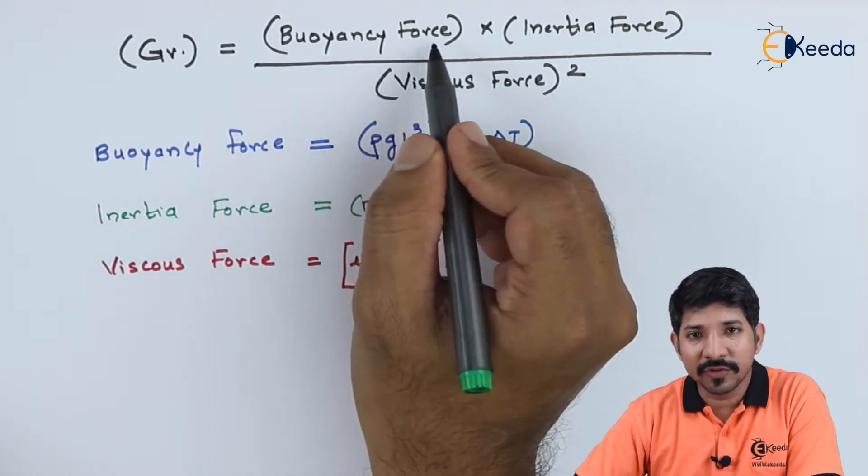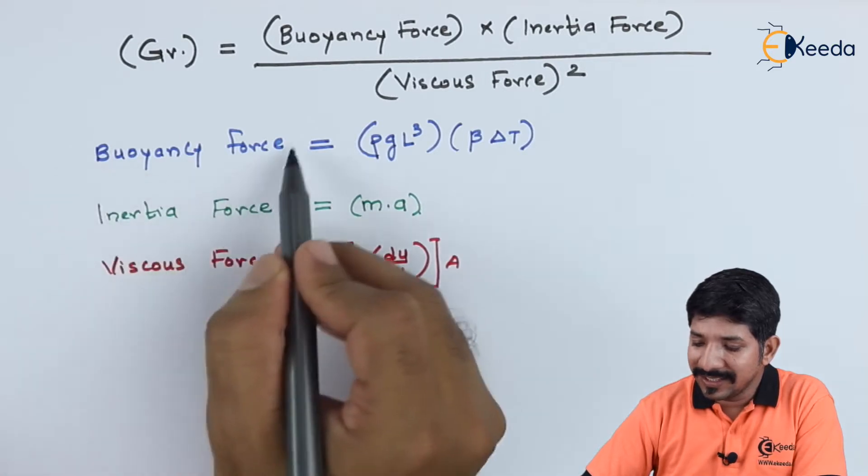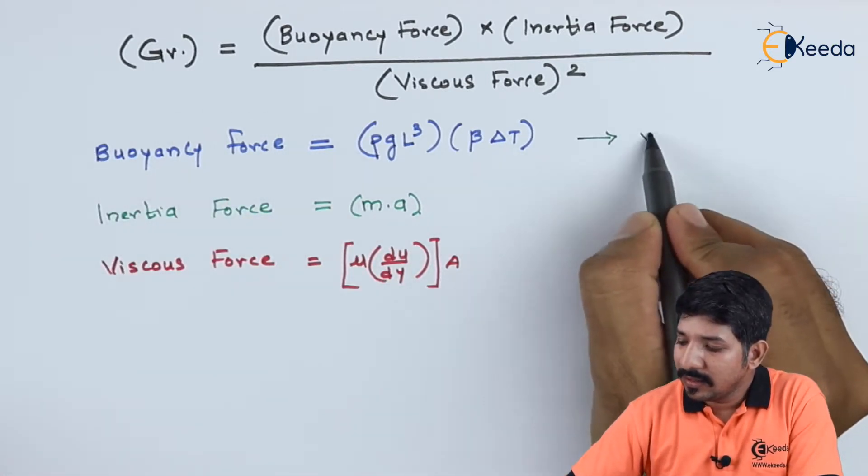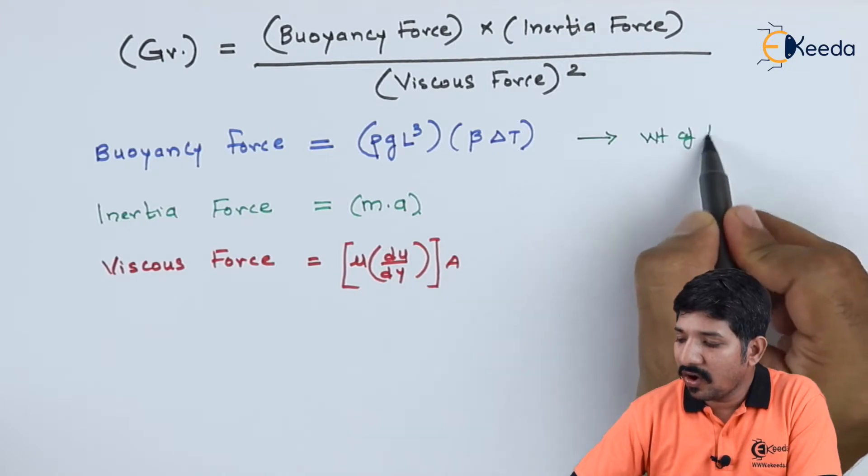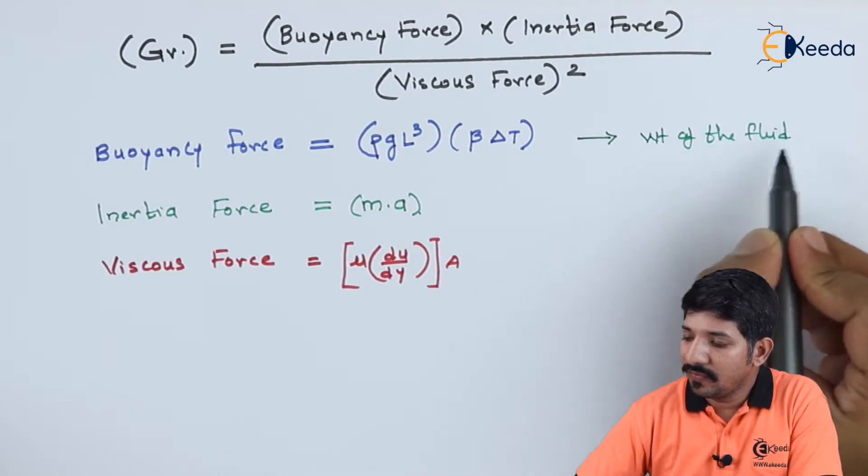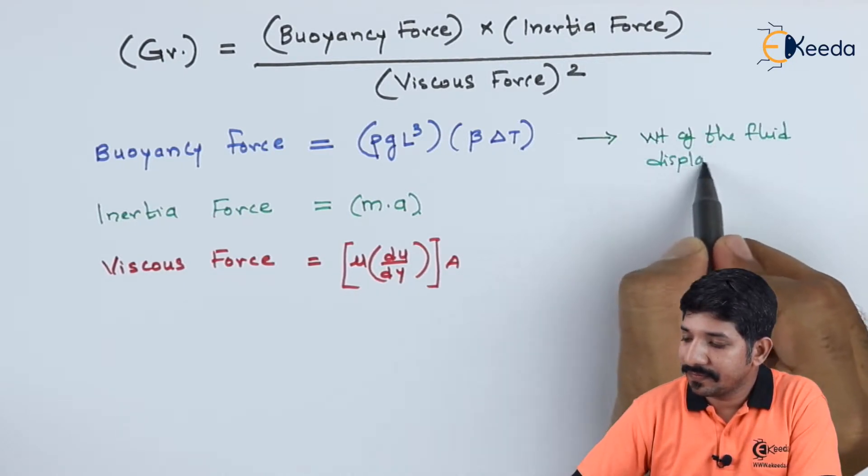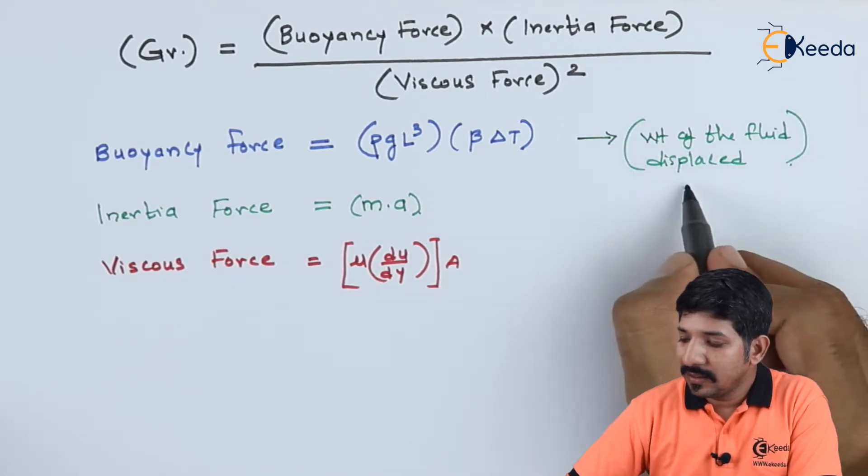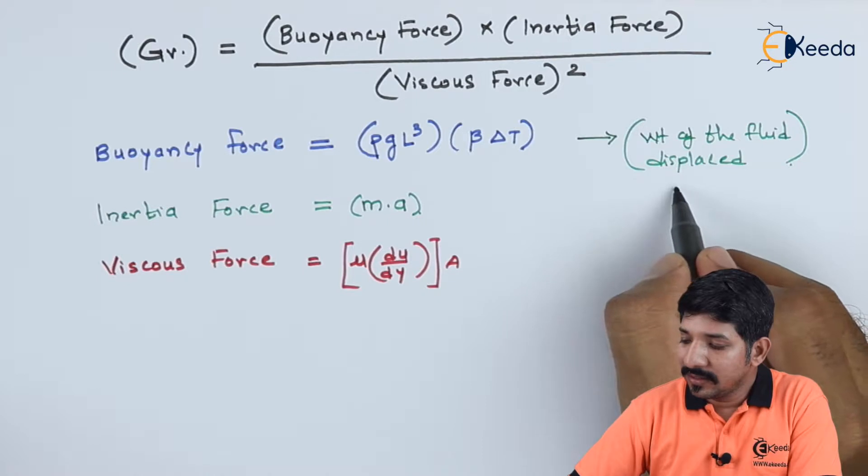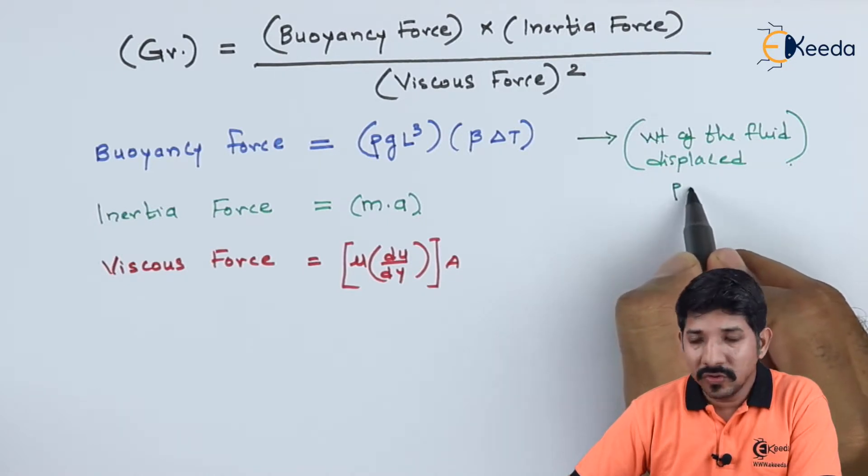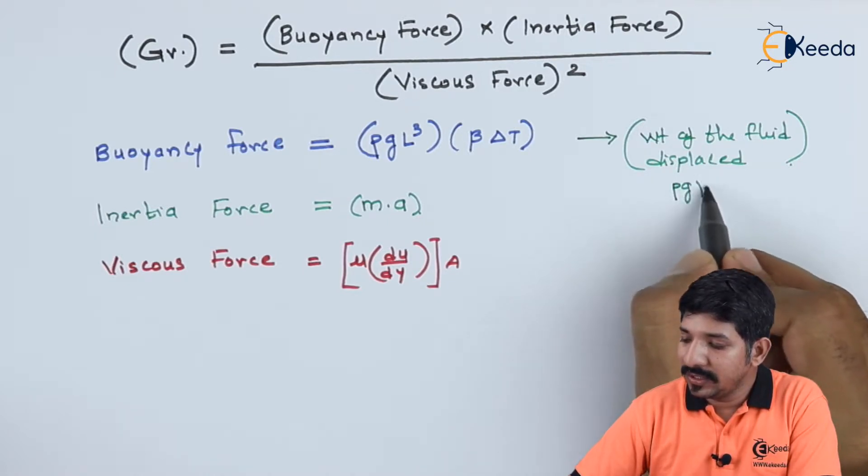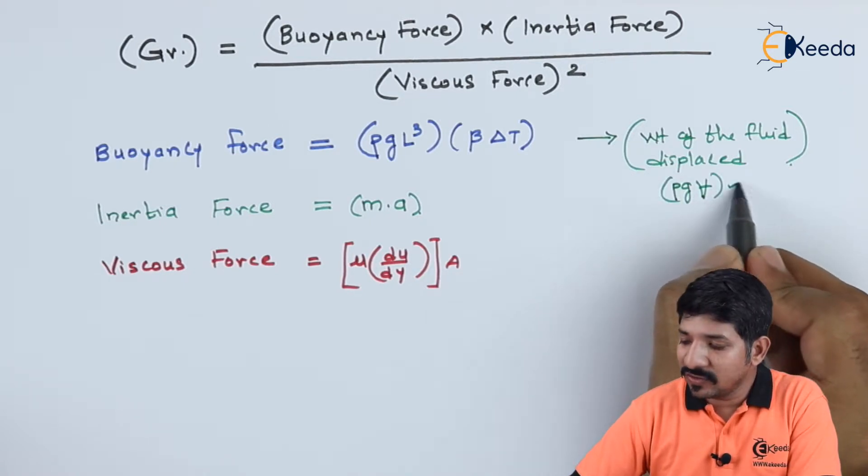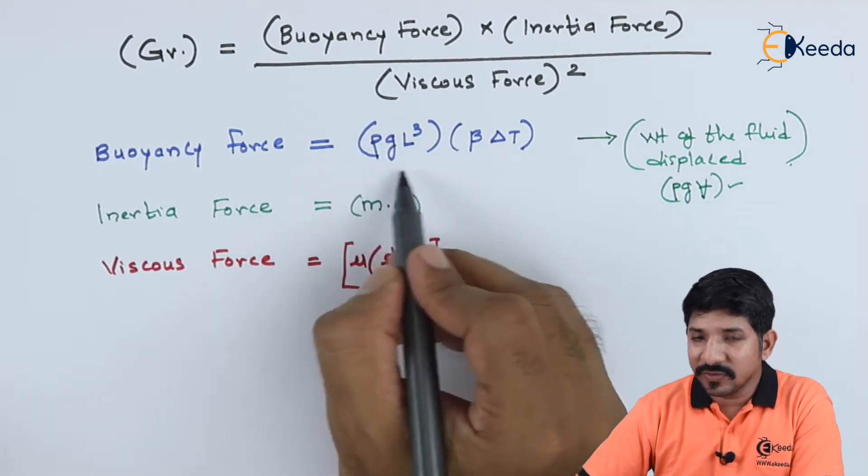What is buoyant force? Buoyant force is nothing but, we have seen this in the fluid mechanics, that it is nothing but the weight of the fluid displaced. So, the weight of the fluid displaced is given as the rho into G into the change in volume. So now, this is what we have done in case of fluid mechanics. The similar steps we are going to do here.